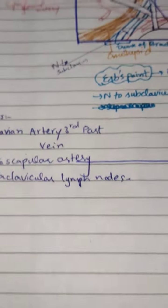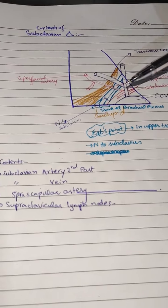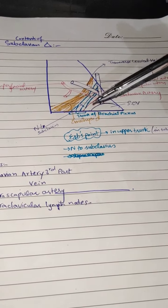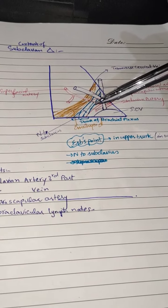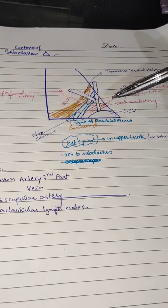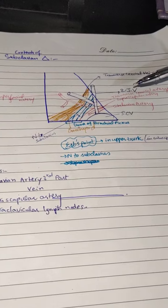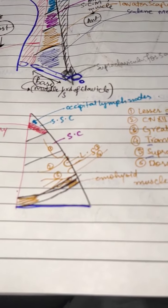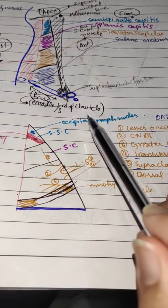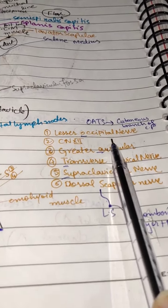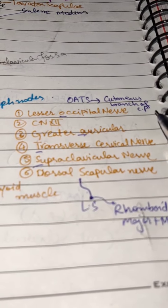The subclavian triangle contains the subclavian vein, the third part of the subclavian artery, and cervical lymph nodes. These are the main contents of the subclavian triangle.